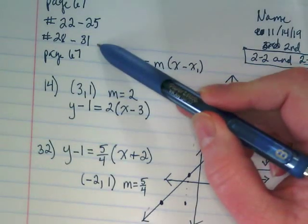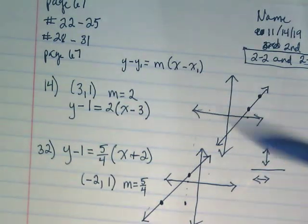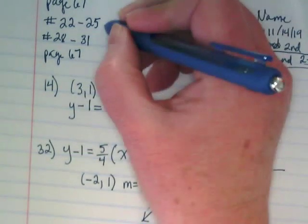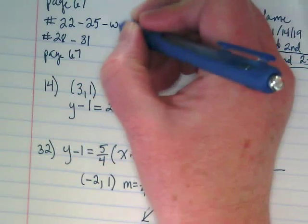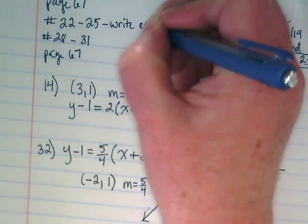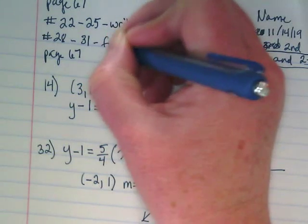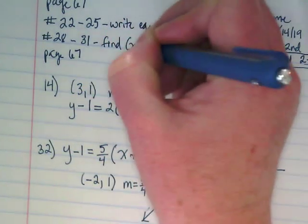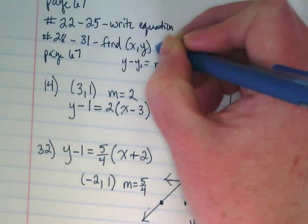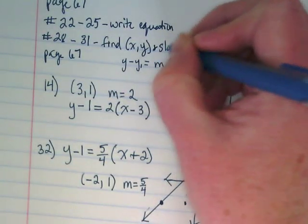So we're going to do 23 to 25, 28 to 31. With the first part, you just need to write the equation. With the last four, you need to find an ordered pair and slope and graph it.